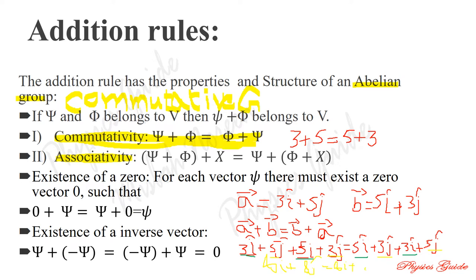We proved the equality of both orderings. Changing the order of vectors gives the same answer. This shows that this is an abelian group, also called the commutative group. These are the properties of addition rules in a linear vector space.